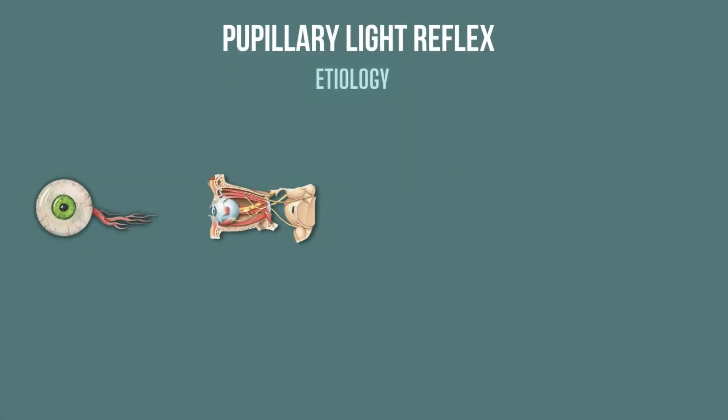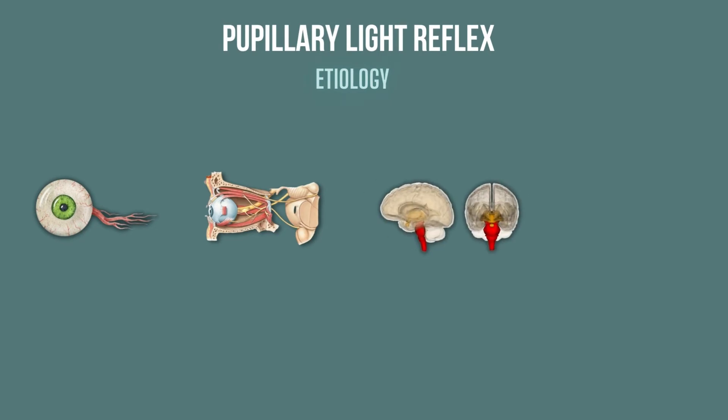Optic nerve injury, oculomotor nerve damage, brain stem lesion, including brain stem death, and depressive medicines such as barbiturates can all cause abnormal pupillary reflexes.